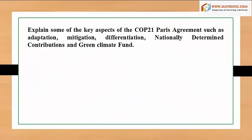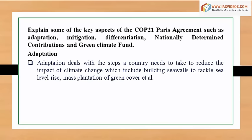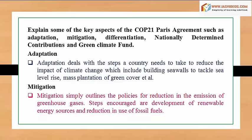Key aspects of the COP 21 Paris Agreement include adaptation, mitigation, differentiation, nationally determined contributions, and the Green Climate Fund. Adaptation deals with steps a country needs to take to reduce the impact of climate change, such as building sea walls to tackle sea level rise and promoting plantation of green cover. Mitigation outlines policies for reduction in greenhouse gas emissions, with steps including development of renewable energy sources and reduction in the use of fossil fuels.